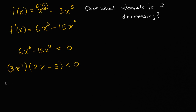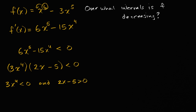So either three x to the fourth is negative and two x minus five is positive, or three x to the fourth is positive and two x minus five is negative.